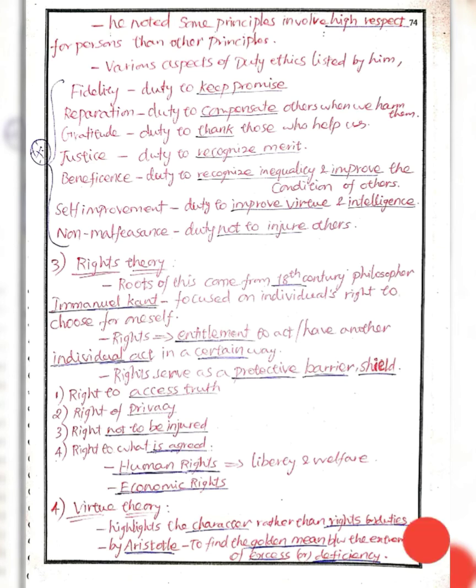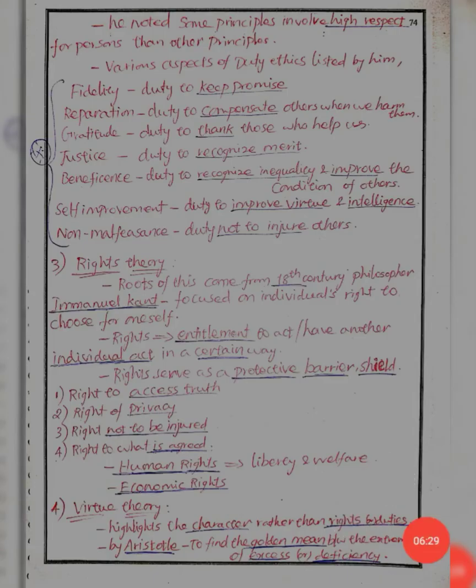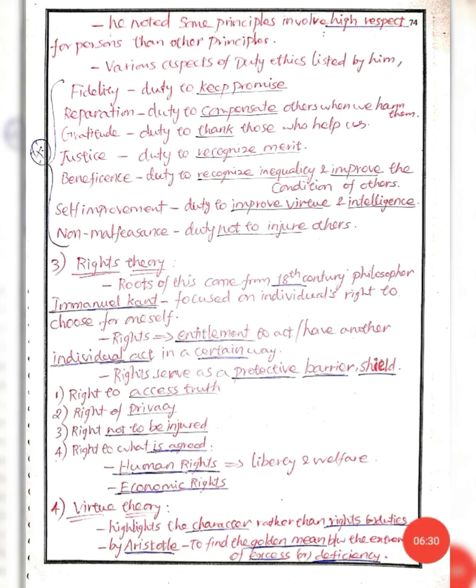There are two types of rights: human rights and economic rights. Within human rights, liberty and welfare are two types. Liberty rights are natural and apply to all types of human rights.